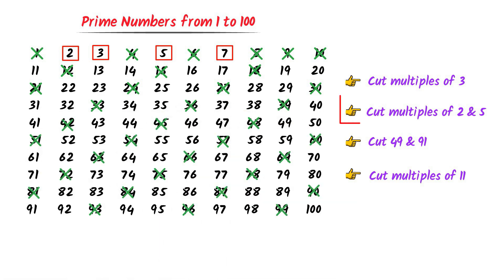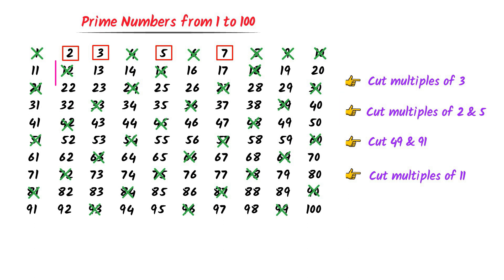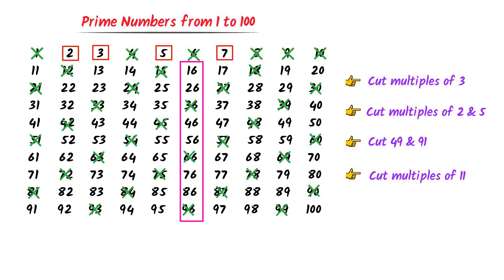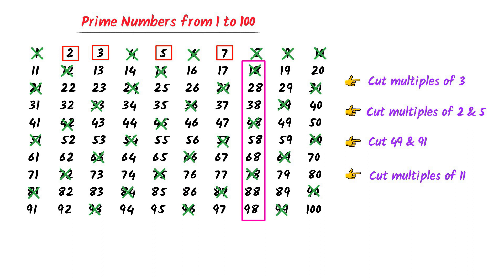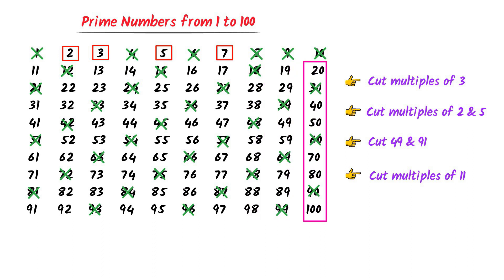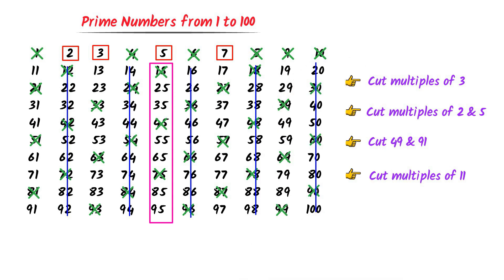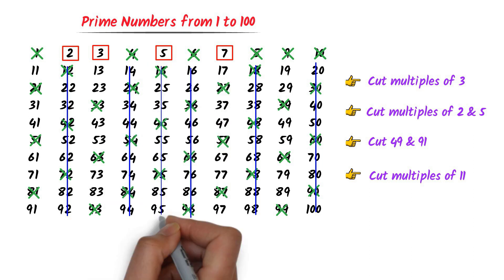According to Step 2, I cut the multiples of 2 and 5. The columns containing 12, 22, 32 — then 14, 24, 34 — then 16, 26, 36 — then 18, 28, 38 — and 10, 20, 30 are all multiples of 2. I cut those entire columns. The column containing 15, 25, 35 contains multiples of 5, so I cut that column as well.